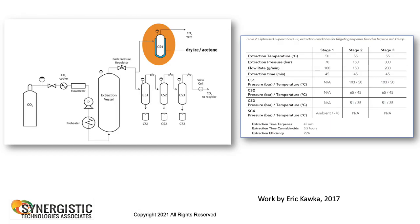It's also possible to take off different components when you want using switching valves. In this example with CO2: it goes through a pump, through an extraction vessel, and at the top right you have a switching valve. You go through a collection vessel with dry ice and acetone, collect the terpenes under very light conditions, then switch and take out the cannabinoids. Very quickly you can see how you can separate different components using just one instrument.